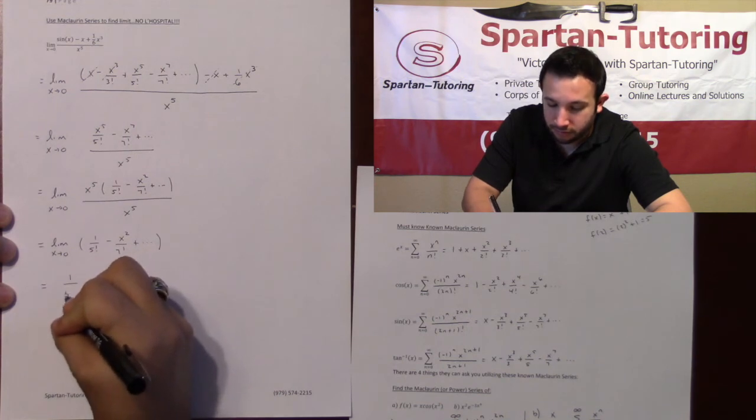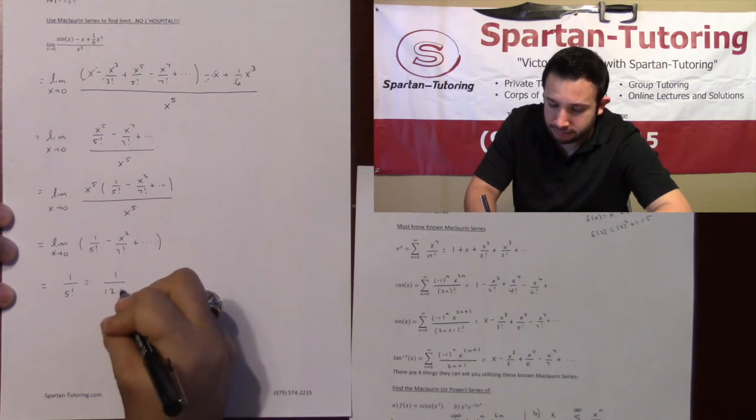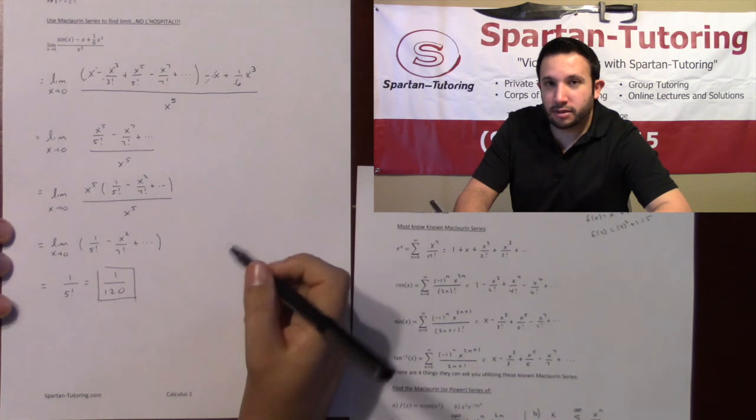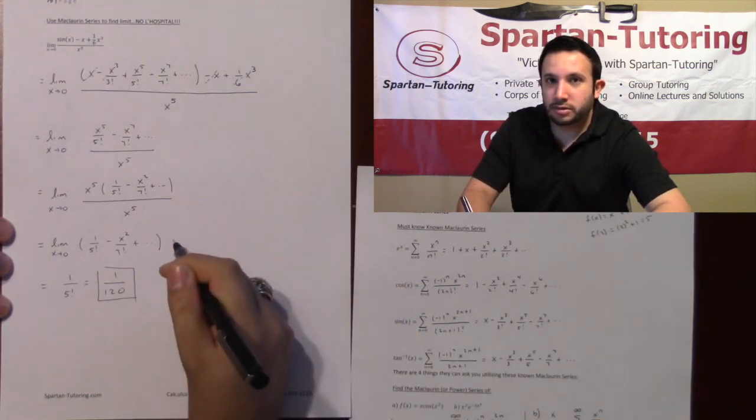This will be 1 over 5 factorial, which if I do my math correctly is 120. And so that's how you're going to do limits utilizing your known Maclaurin series.